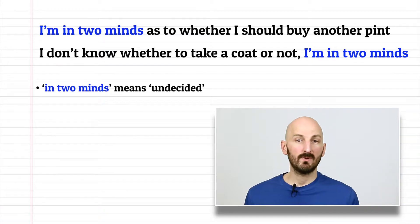Next, I'm in two minds as to whether I should buy another pint. This is a simple expression that means undecided. It's used when you have only two options, and you can't decide between them. You can change the pronoun, but it's almost always I. Another example is, I don't know whether to take a coat or not. I'm in two minds.